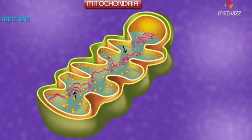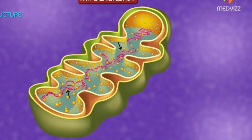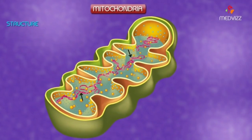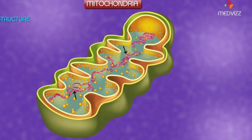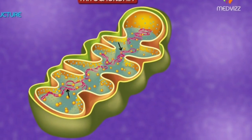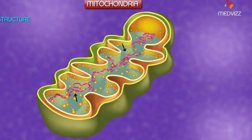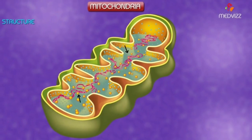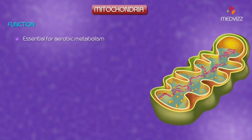The mitochondrial DNA is found within DNA-protein complexes called nucleoids, located in the mitochondrial matrix. Now we discuss the function of mitochondria.